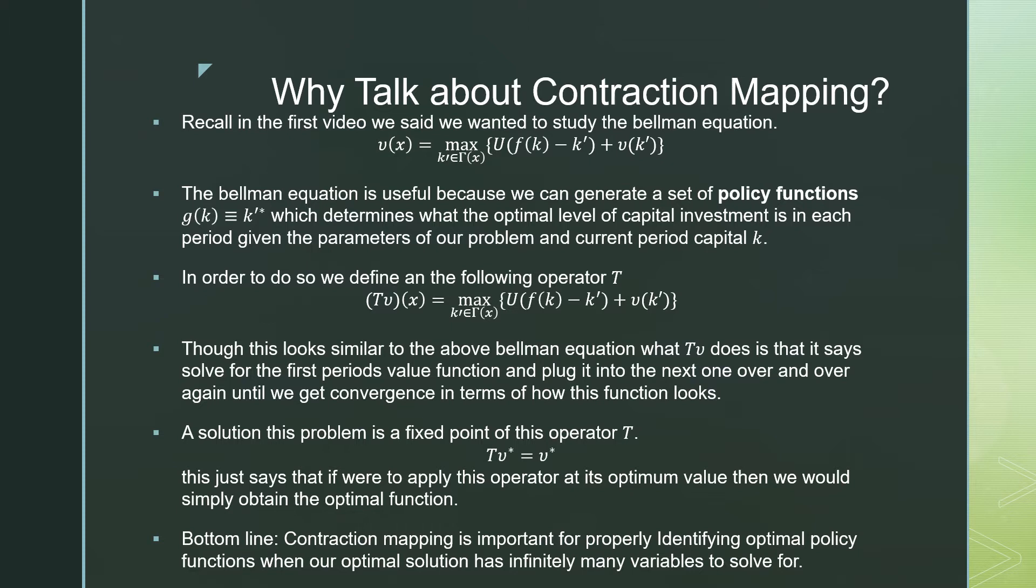In order to do so we need to define the following operator T, which is essentially solving this maximization problem of the Bellman equation. Though it looks similar to the Bellman equation, what TV does is it says that we're going to solve for the first period's value function and plug it into the next one over and over again. In this one here I'm just saying we run this procedure only once, but what we want to do is run this procedure a number of times.